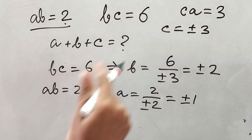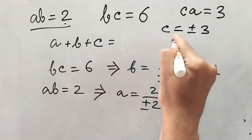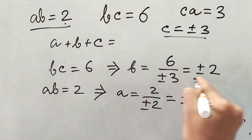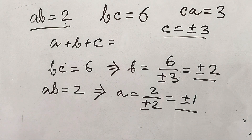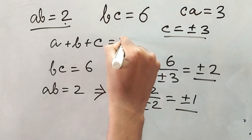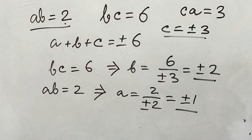If we add all these — C is ±3, B is ±2, and A is ±1 — they will definitely hit plus or minus 6. This is your answer.